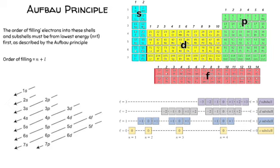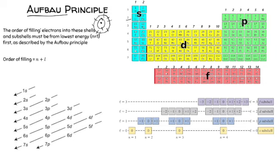The Aufbau principle — which simply means 'building up' — states that the order of filling electrons into shells and sub-shells must be from the lowest energy first, then increasing energy levels. It's similar to what we did in junior school: fill the first shell with two electrons, then the second shell with eight, and so on. But now we're looking more closely at sub-shells and orbitals as we go.